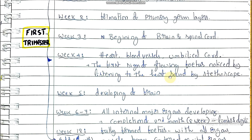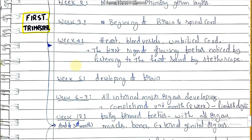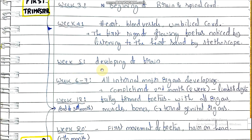The heart is formed after the completion of the first month. The heartbeat sound can be heard by doctors using a stethoscope. This is the first sign of a growing fetus, observed after completion of the fourth week or the end of the first month of the first trimester.